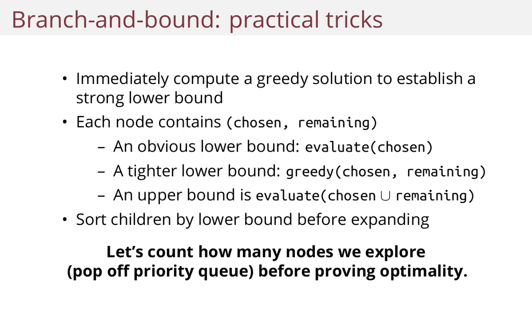A tighter lower bound, which is a bit more computationally expensive, is to do a greedy algorithm on the remaining Pokemon. So you fix the chosen ones and you run the greedy algorithm on the remaining ones.